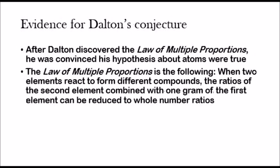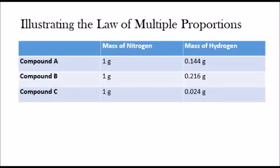The evidence for Dalton's conjecture came from the law of multiple proportions, and this convinced him that his theory on atoms was true. The law of multiple proportions states: when two elements react to form different compounds, the ratios of the second element combined with one gram of the first element can be reduced to whole numbers. This probably makes no sense, so let's look at an example.